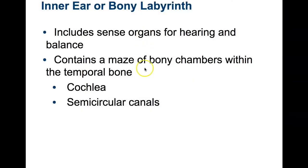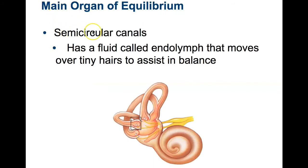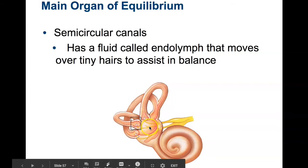Before we get to hearing physiology, we need to talk about the semi-circular canals — the part of the bony labyrinth we didn't discuss yesterday. The semi-circular canal is where we find our sense of balance, our equilibrium. Within these chambers there's a fluid known as endolymph.